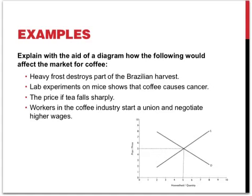A different possibility is that lab experiments on mice show that coffee causes cancer. This would shock consumers, and their preference for coffee would decrease. Less coffee would be demanded at every price and the demand curve moves to the left. The result is a decrease in both the equilibrium price and the equilibrium quantity.